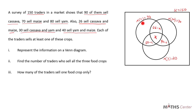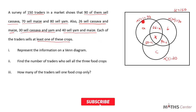We don't know the number who sell cassava only, maize only, or yam only, so let's use a for cassava only, b for maize only, and c for yam only. The question states each trader sells at least one crop, meaning the complement of C ∪ M ∪ Y is zero, so we place zero outside all three circles in the Venn diagram.